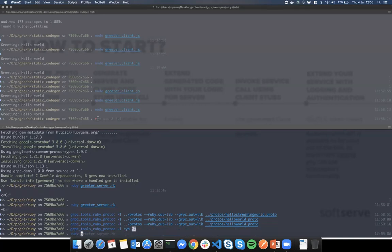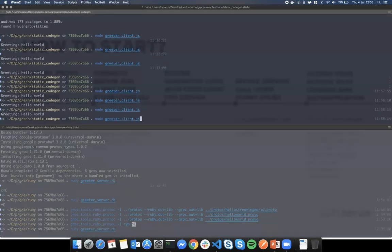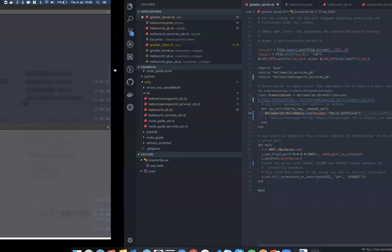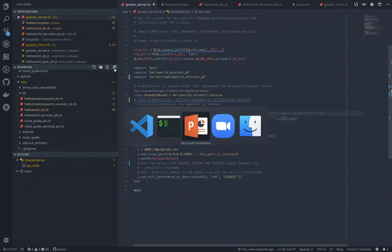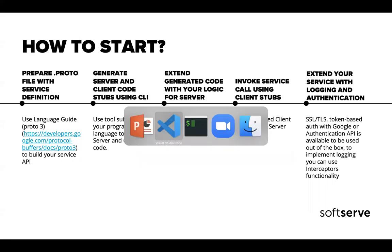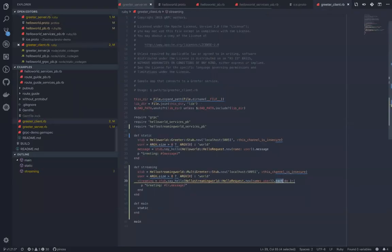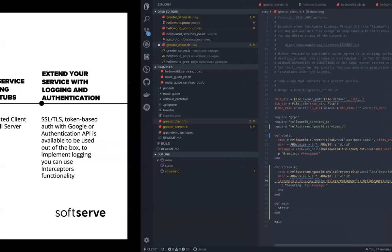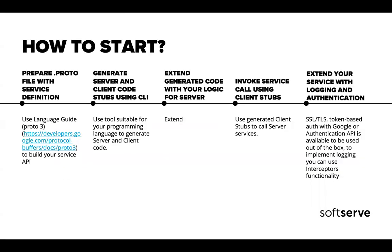You start the service, and Node will get that information. It's very simple to extend. You just need to remember what has to be returned. Then you invoke the service using the client stubs — using the stub and calling Say Hello — it gives you the message and response. After that, you extend your service with additional things like SSL/TLS, token-based authentication, or logging.